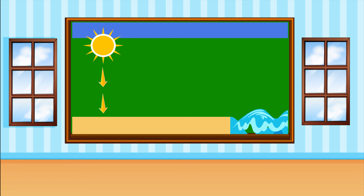Now let's see how wind is actually formed. The sun heats the land and the air above it. The warm air is lighter than the surrounding air, so it rises up. A vacuum or empty space is created there. The surrounding air is cooler, and cool air sinks below. Cold air rushes in to fill the vacuum created. This movement of rushing air is what we know as wind.